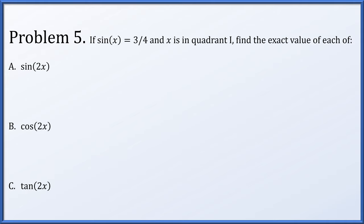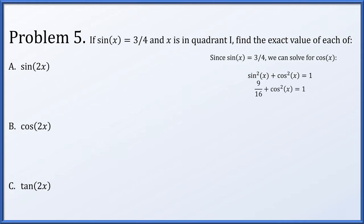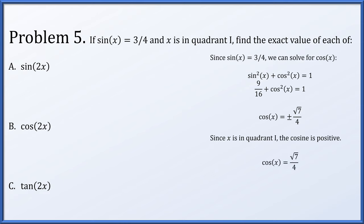In problem 5, if sine of x is 3/4 and x is in quadrant 1, we'll find the exact values of sine of 2x, cos of 2x, and tan of 2x. Since sine of x is 3/4, we use the Pythagorean identity — sine squared x plus cos squared x equals 1. Since sine x is 3/4, its square is 9/16. This gives cos of x equals plus or minus √7/4. Since x is in quadrant 1, cosine must be positive, so cosine of x is √7/4.